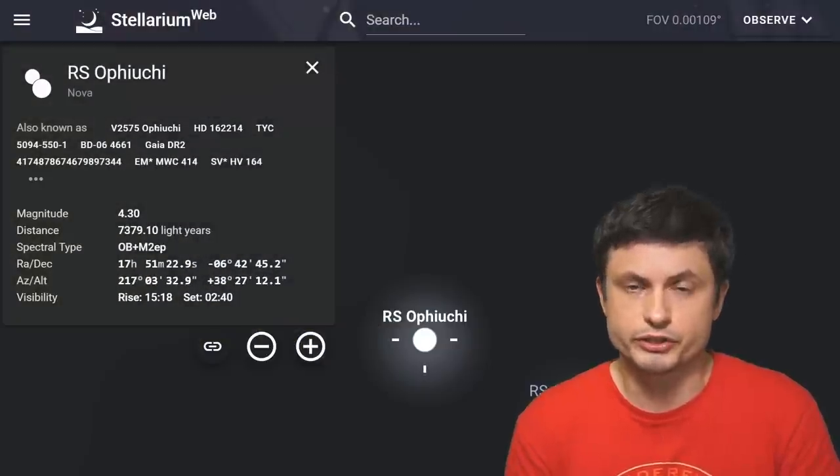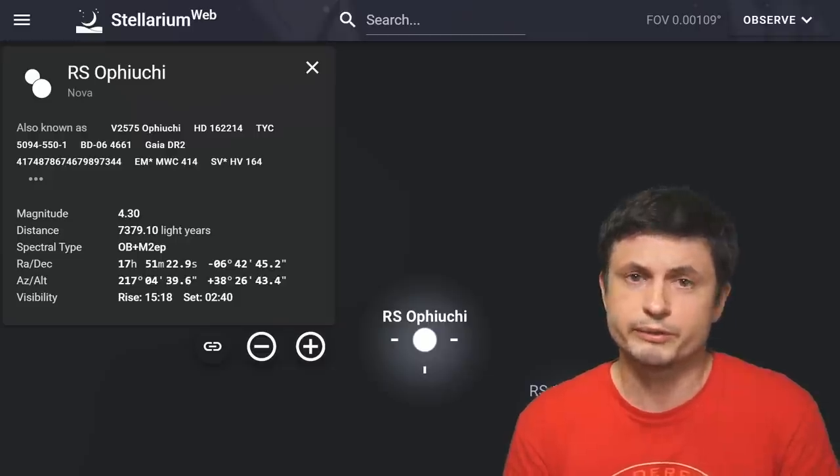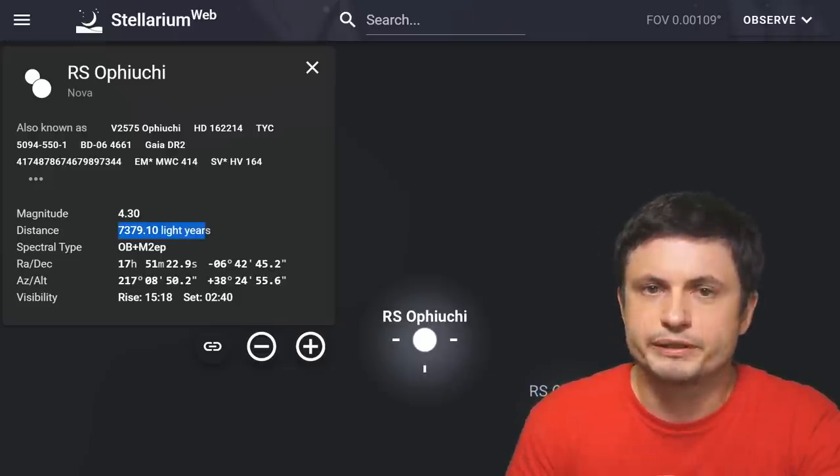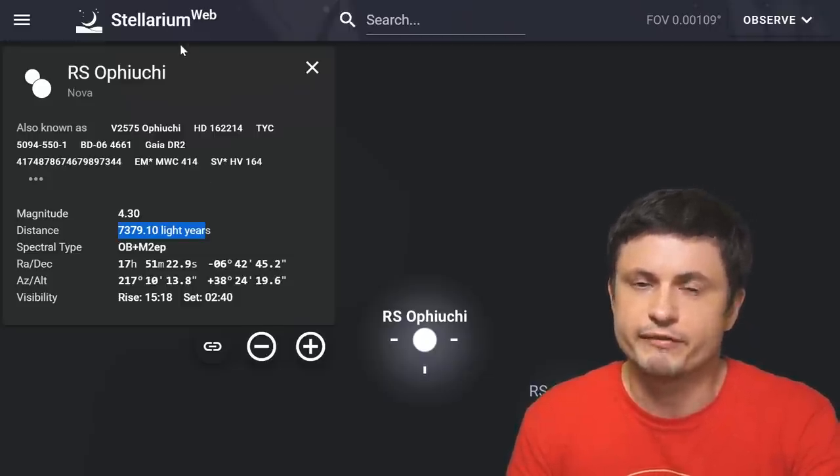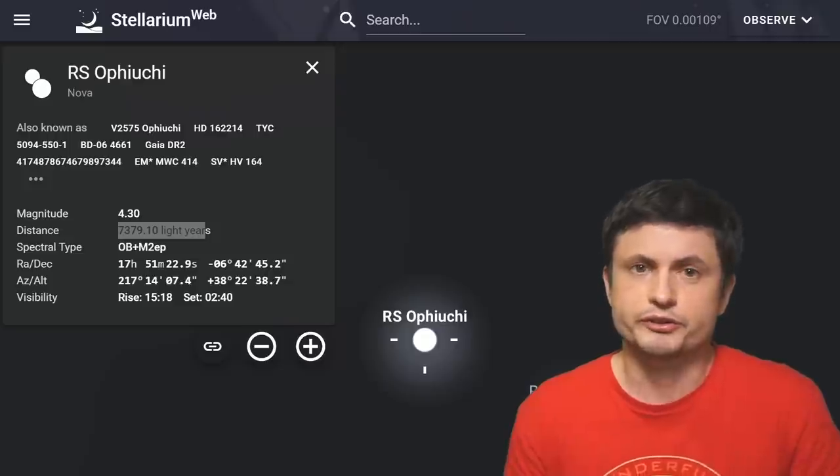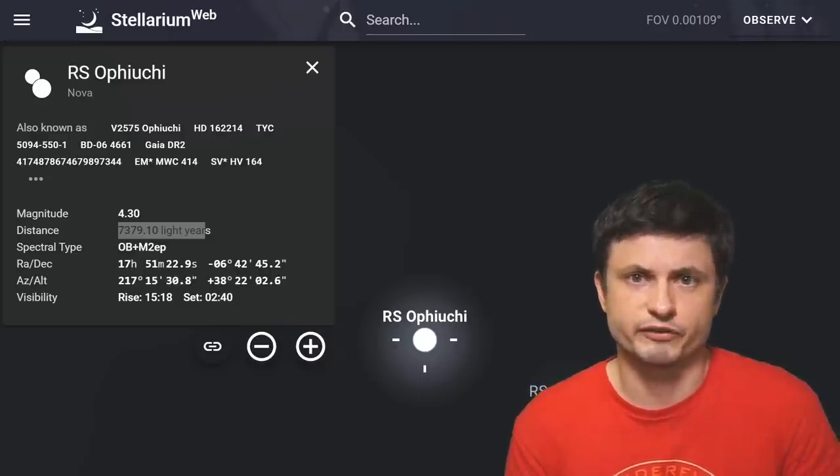Here, the white dwarf and the larger star orbit around one another every 450 days or so. Although, in this case, the distance might be outdated. The object is very likely about 5,000 light years away from us. And so, this is sort of how you can find it yourself by using your phone or any other tool, assuming you live in a dark enough environment.